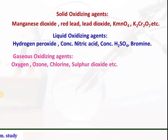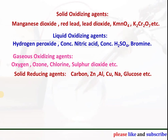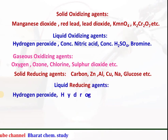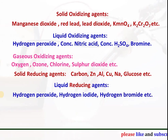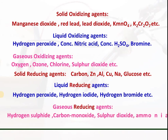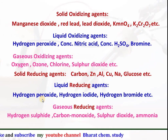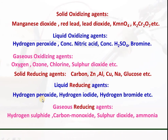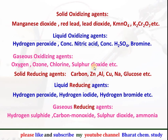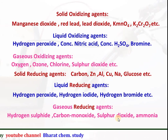Gaseous oxidizing agents include oxygen. Liquid reducing agents include hydrogen sulfide. Gaseous reducing agents include hydrogen sulfide, carbon monoxide, sulfur dioxide, and ammonia. Note: hydrogen peroxide is a liquid which can act as both an oxidizing agent and a reducing agent. Similarly, sulfur dioxide is a gas which can act as both a reducing agent and an oxidizing agent.